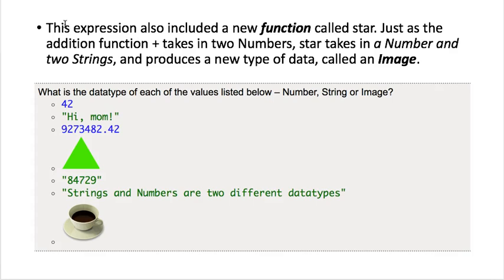So in the example we used, the expression included a new function called star, right? So that was the operation we were doing. I've been calling it operation because that's the mathematical operation. But now that we can do new things that are more than just mathematical operations, we can call it a function. So a function tells the computer what to do.